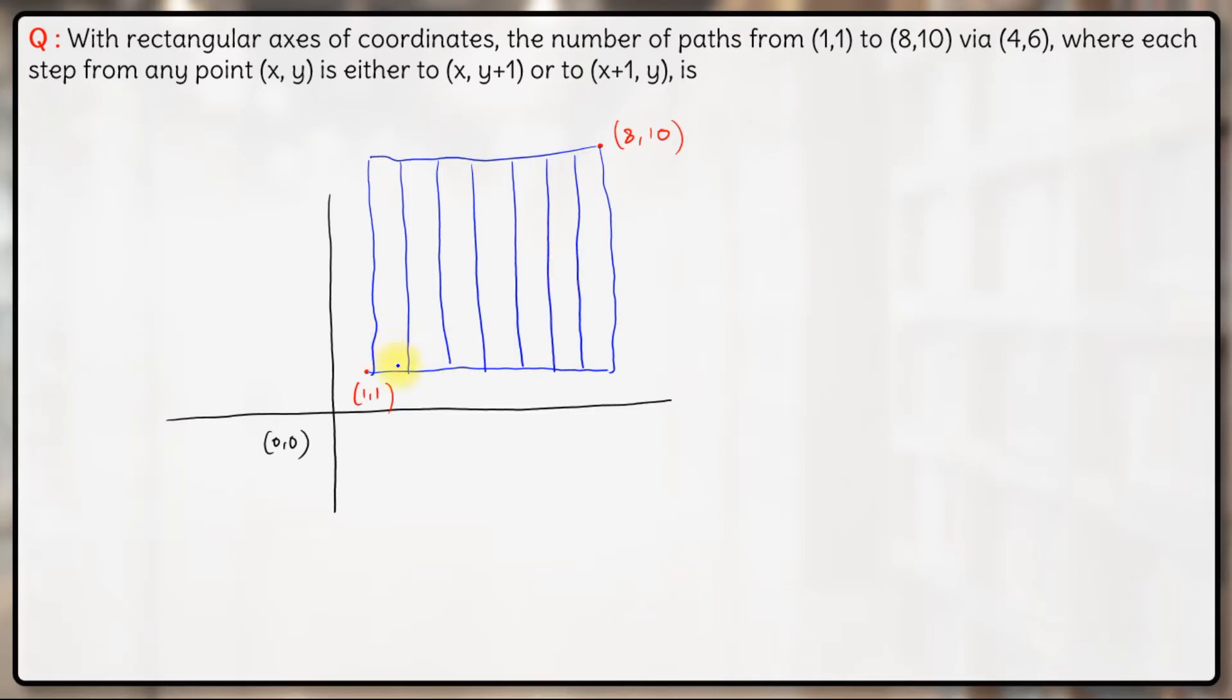And then next is let us draw lines for y. This is the line for y equals to 1 and this is the line for y is equal to 10. So from y equals to 1 till y equals to 10, we will have further more lines: y equals to 2, 3, 4, 5, 6, 7, 8, 9 and this is 10.